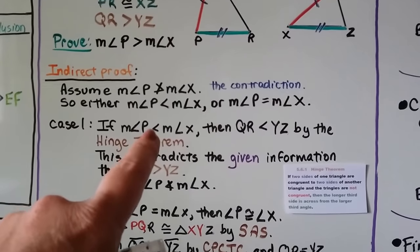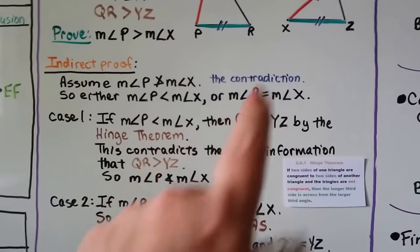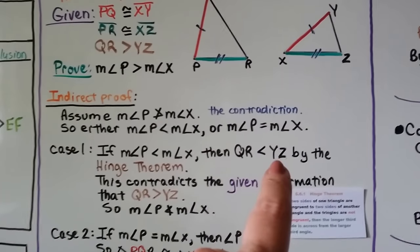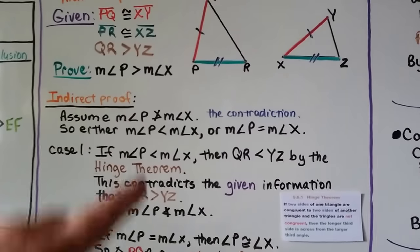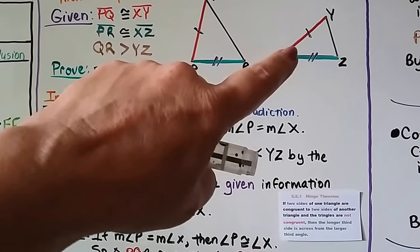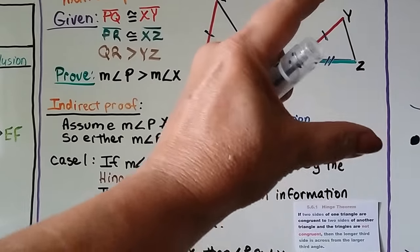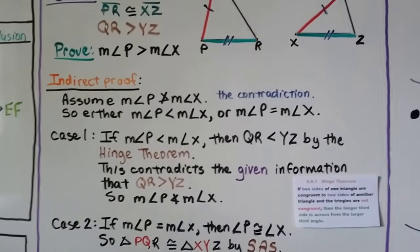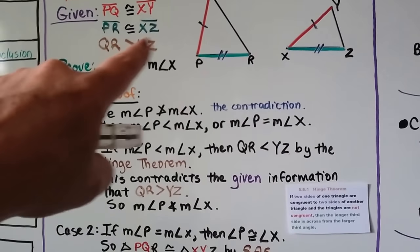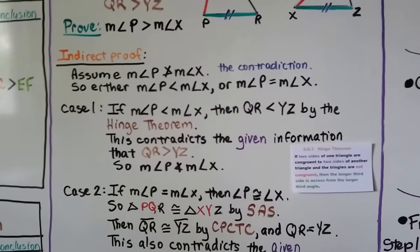In Case 1, let's try less than. If the measure of angle P is less than the measure of angle X, then QR is less than YZ by the Hinge Theorem — because if angle P is smaller, then QR must be smaller and YZ must be greater. But this contradicts the given information that QR is greater than YZ, so angle P cannot be less than angle X.